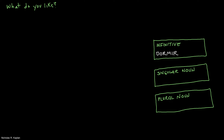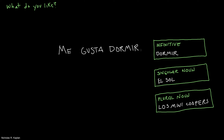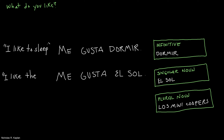So if I had to do this, I would say maybe something like: to sleep, the sun, and mini coopers. And if I wanted to say I like to sleep, I'm going to say me gusta dormir. I like the sun — me gusta el sol. I like mini coopers — me gustan, with an N, los mini coopers.